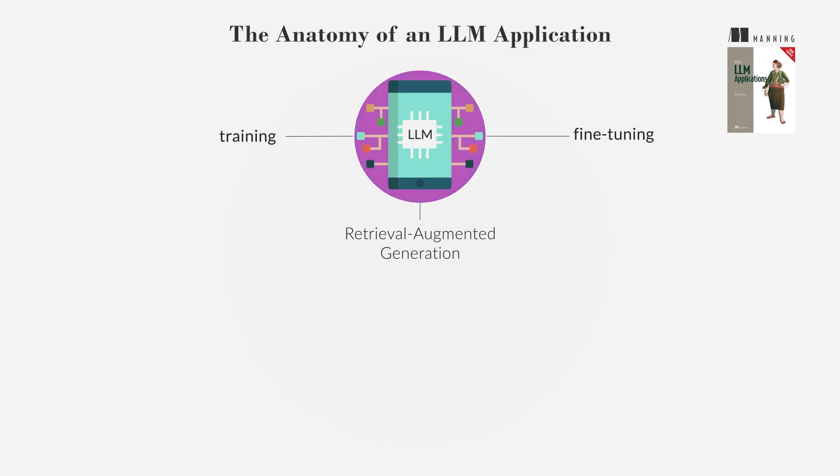Retrieval Augmented Generation, RAG, is an important tool that enhances language models by finding relevant information from specific data sources and providing more accurate responses.